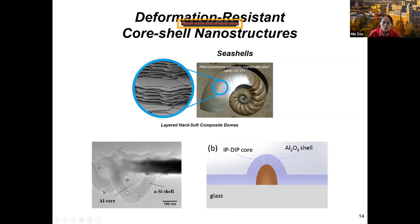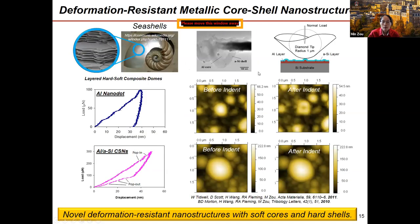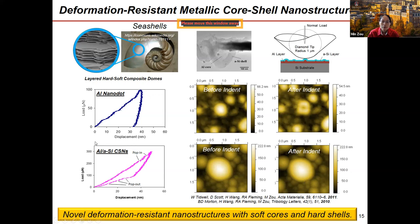One example we learned from is seashells. Seashells have domed shapes that help distribute stress evenly, and layered hard and soft materials that provide both hardness and toughness, making them very strong. We discovered that core-shell nanostructures can provide structural durability. One core-shell nanostructure we studied has an aluminum core covered with an amorphous hard shell.